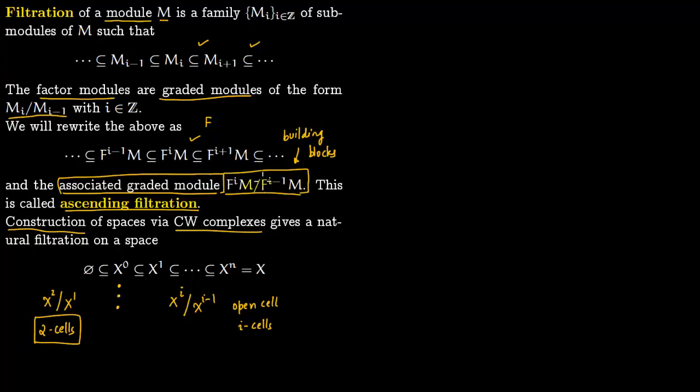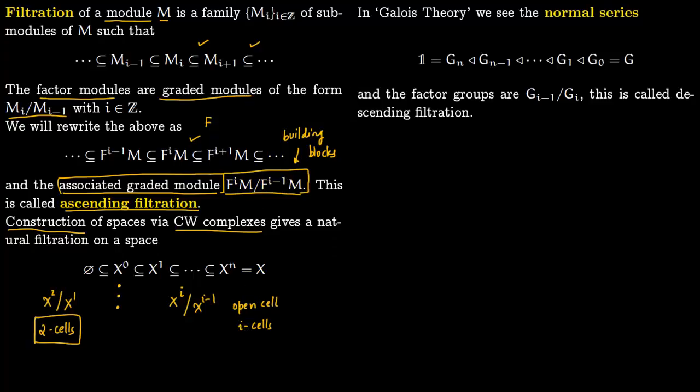These are important to see how they arise, and these are precisely the constructions which will lead to spectral sequences. Another example is in Galois theory, where we see the normal series. We call it subnormal series where G_n is a subgroup of G_{n-1}, in fact a normal subgroup. G_{n-1} is a normal subgroup of G_{n-2}, all the way to G_0 which is our group G.